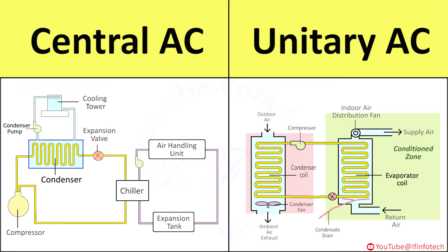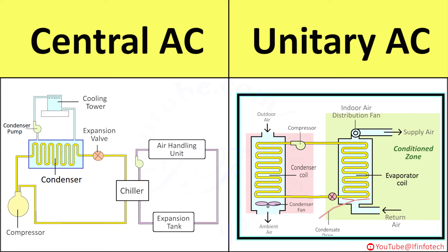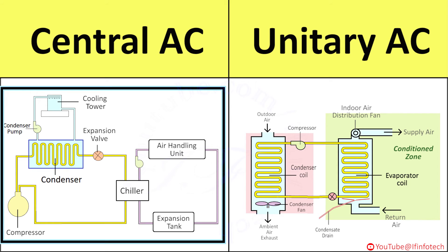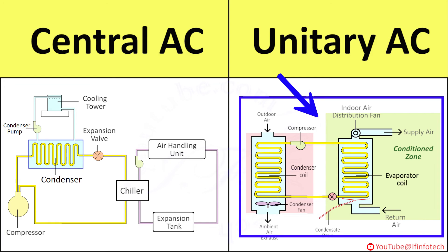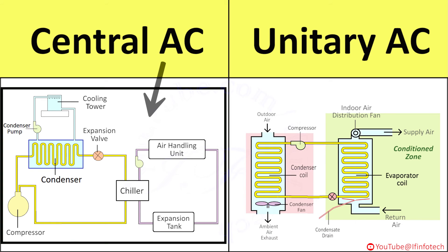Unitary AC is mostly used for large offices and big rooms. Individual room temperature control is possible with unitary AC. It can meet the exact requirement of each room, whereas the central system cannot meet individual needs of separate rooms. In unitary AC, failure of a unit stops air conditioning of only that one room, whereas failure in central AC stops the entire system.